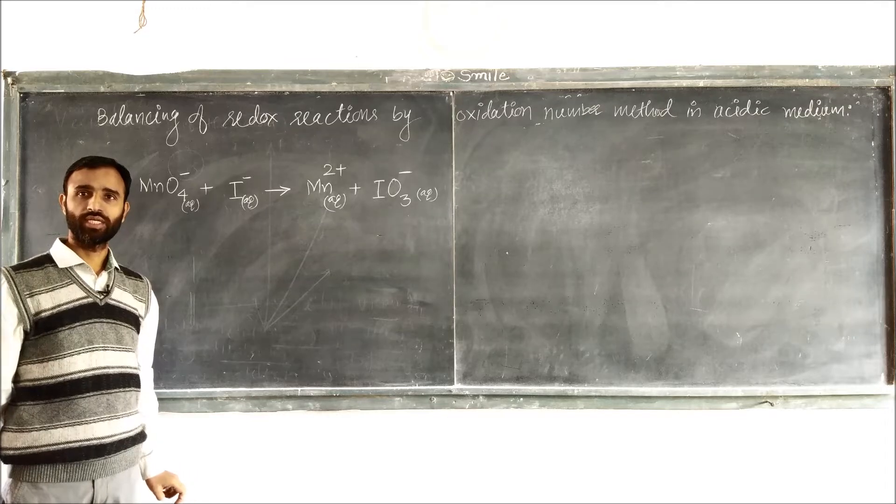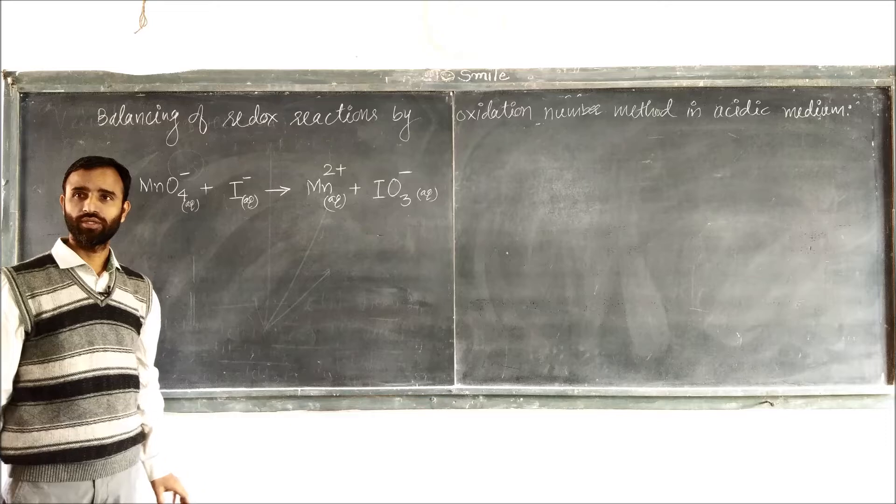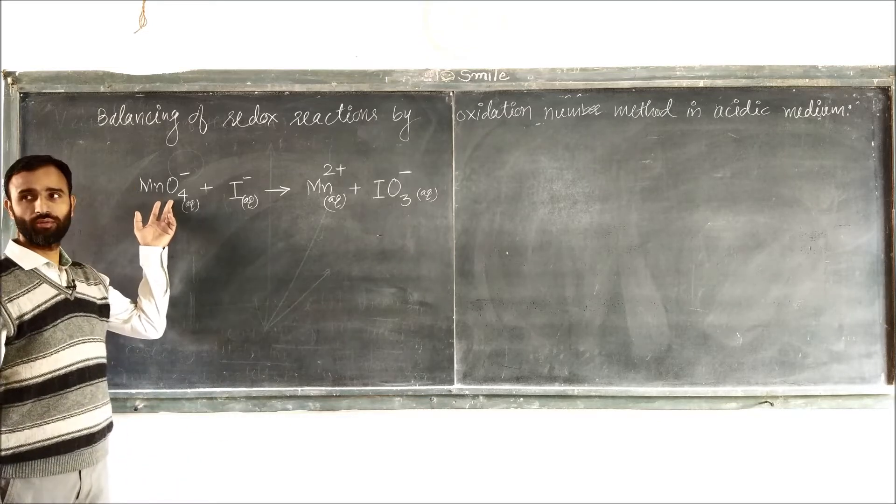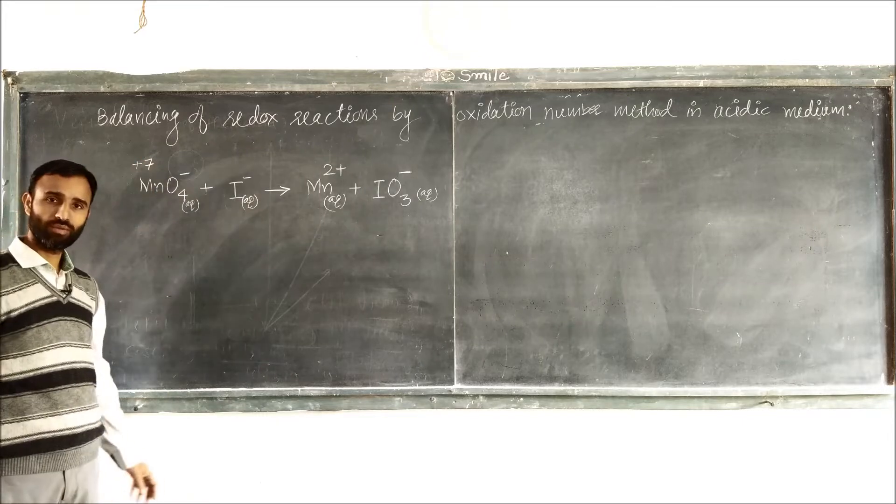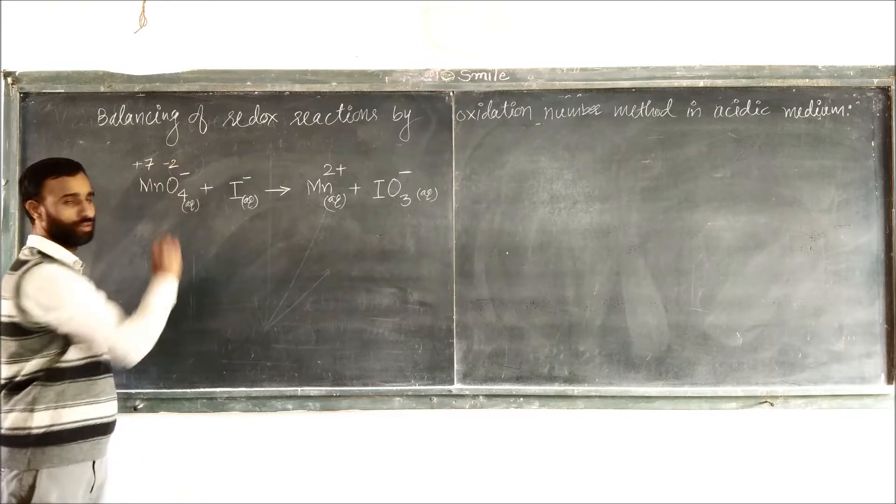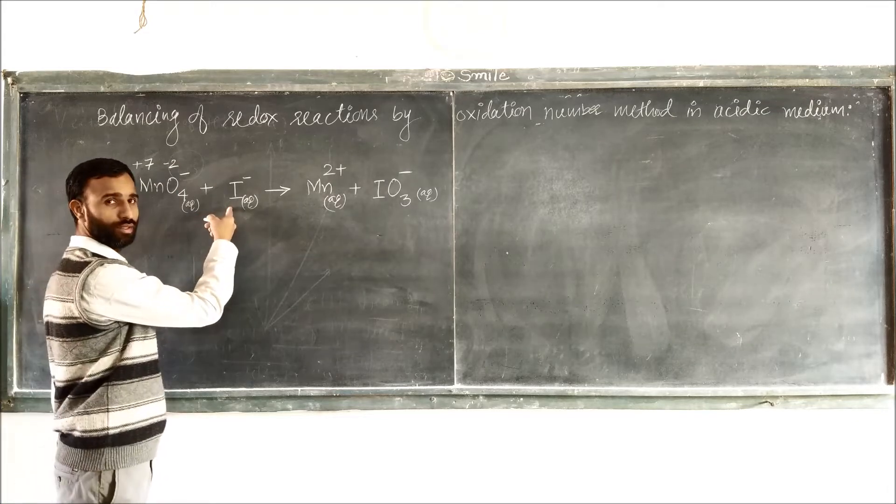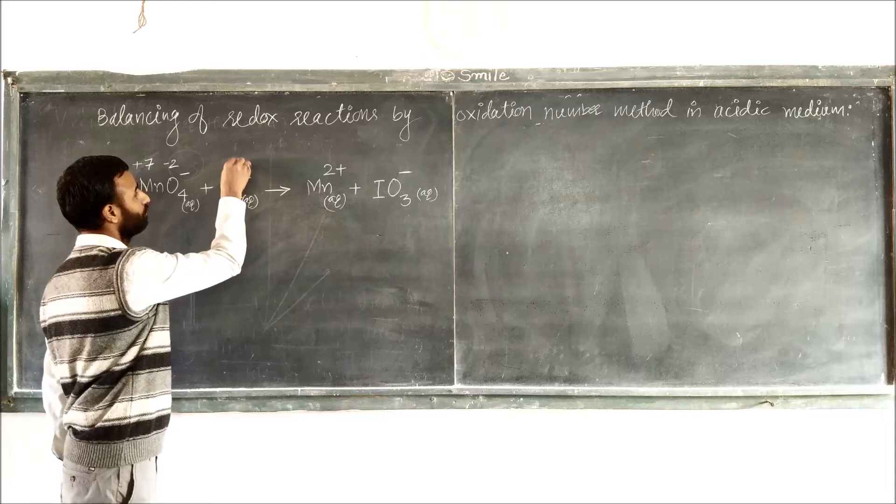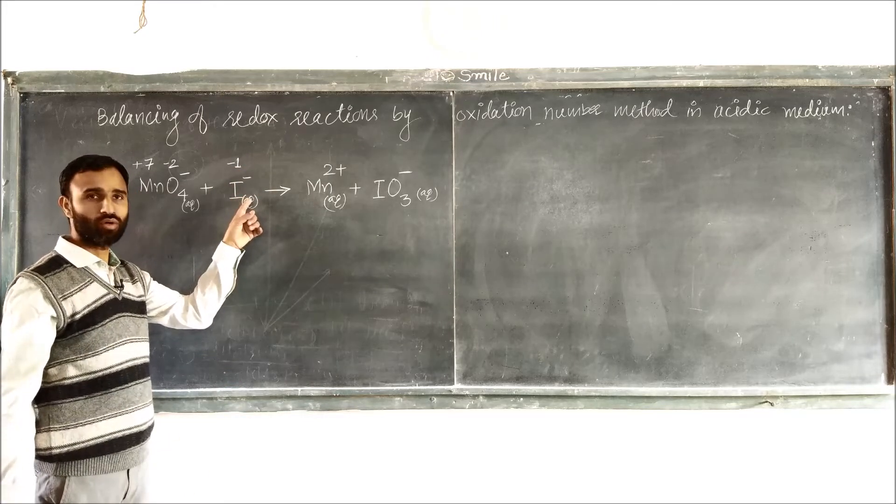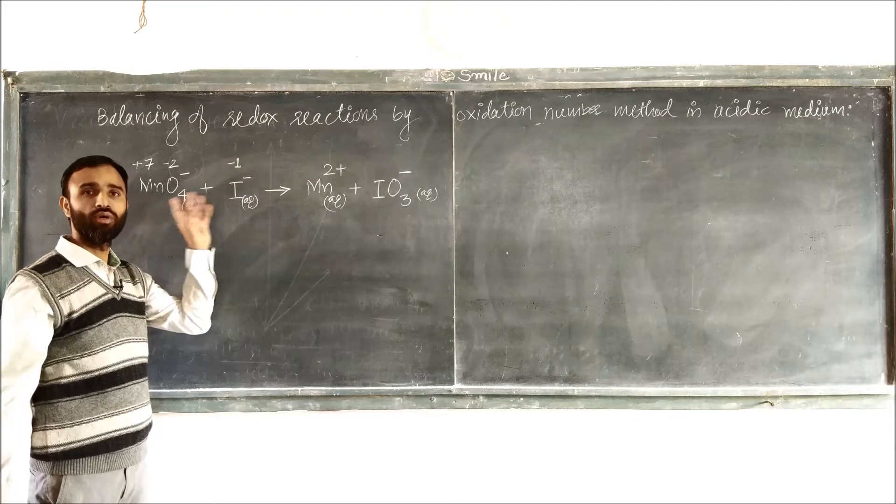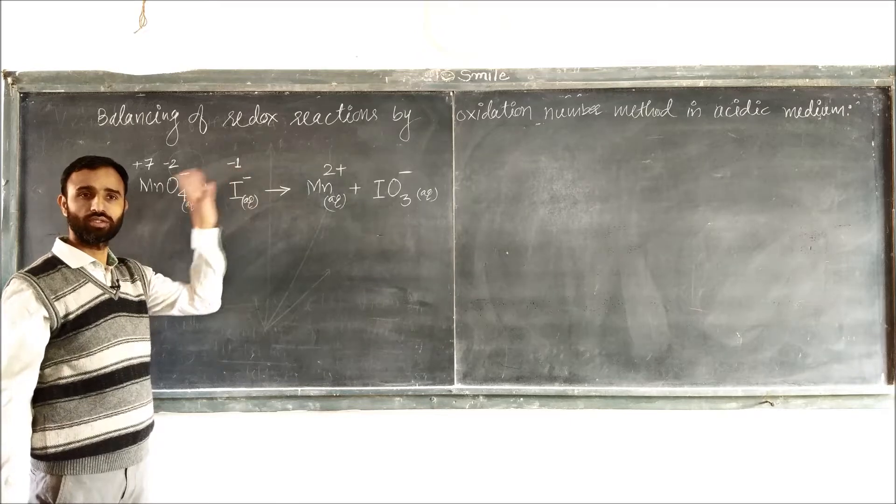Now in MnO4 like this, you know, Manganese plus 7, Oxygen minus 2, Iodine minus 1. Ion, simple ion, oxidation number is charge on ion. For simple ion, oxidation number is charge on ion.